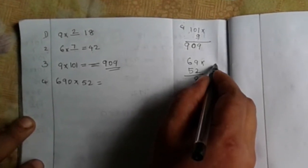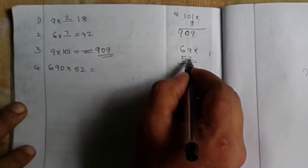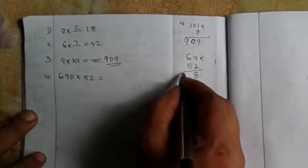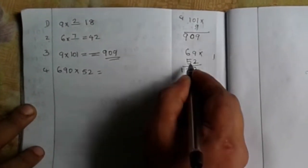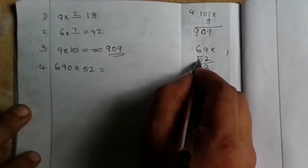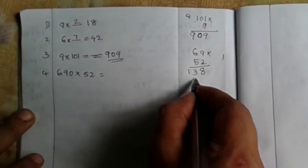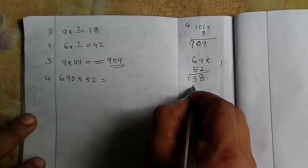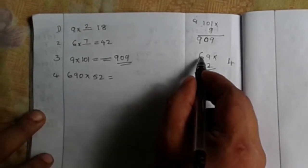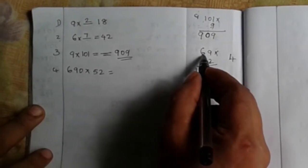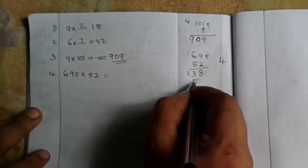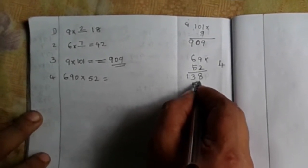8x6 is 48, 18 to 18, 19 to 18. 5x9 is 45. 30, 4 is 44. Let's do one more thing.